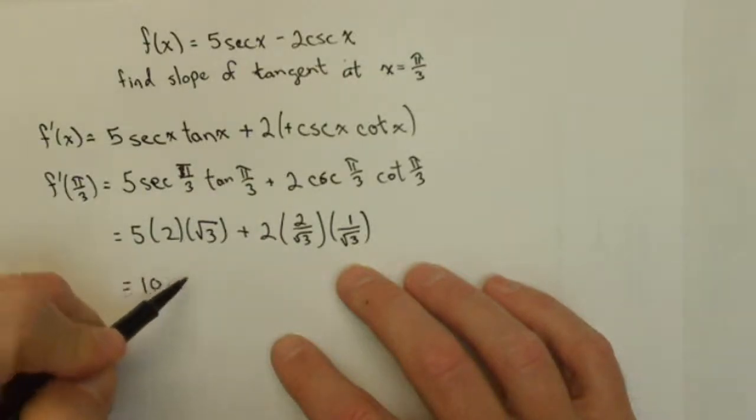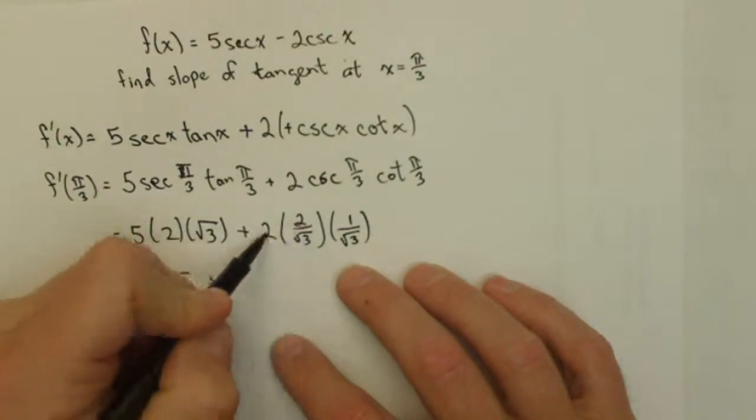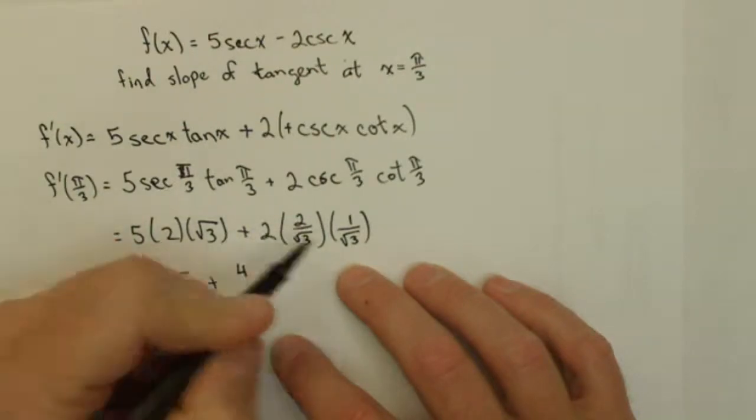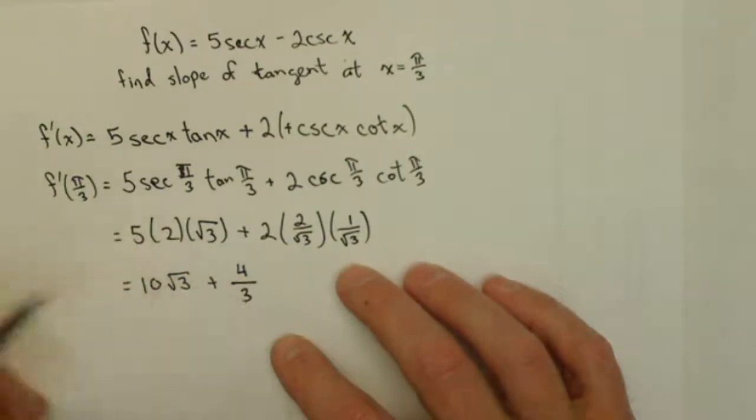So we have 10√3, plus 2 times 2 is 4, and √3 times √3 is 3, giving us 10√3 + 4/3 as our exact answer.